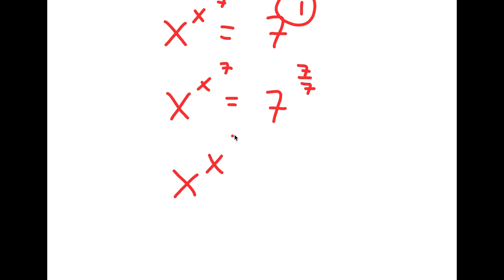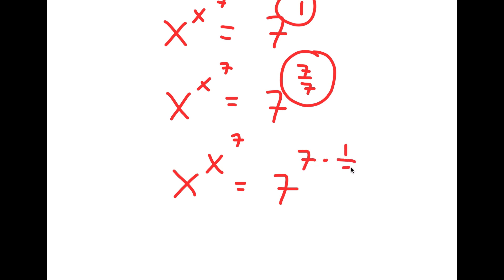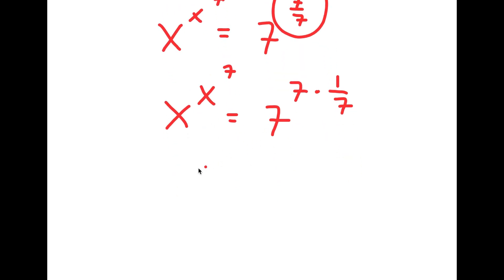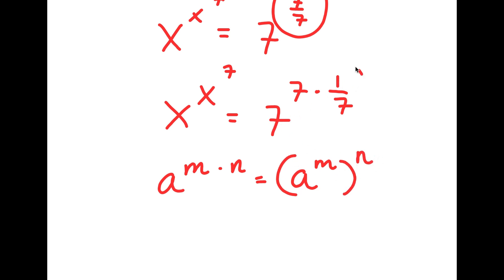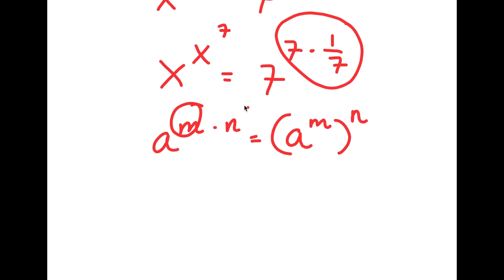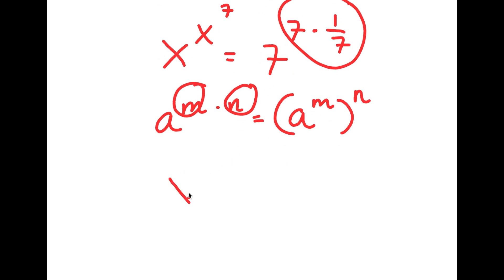For the 7 over 7 here, I can rewrite this as 7 times 1 over 7. Now, if I have something in the form a to the power of m times n, this is the same thing as a to the power of m to the power of n. So here we have 7 to the power of 7 times 1 over 7, with m being 7 and n being 1 over 7. So I can rewrite that as 7 to the power of 1 over 7 to the power of 7.